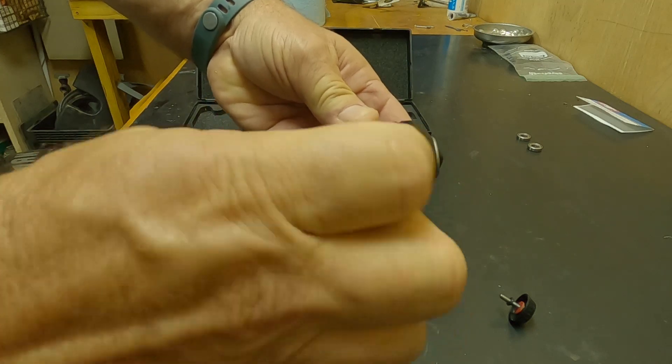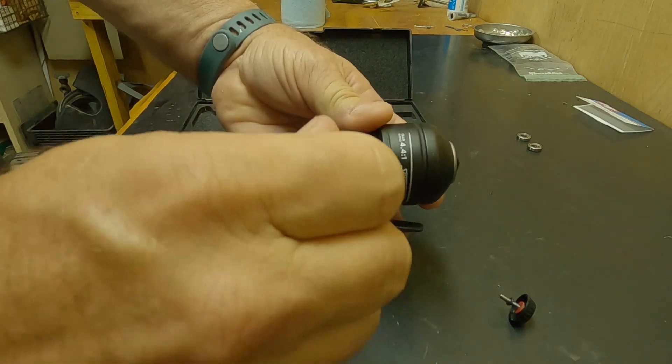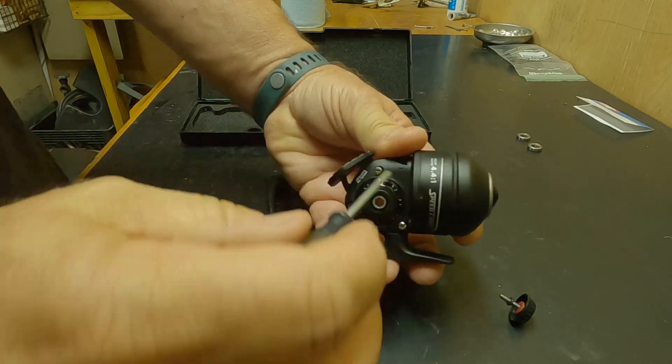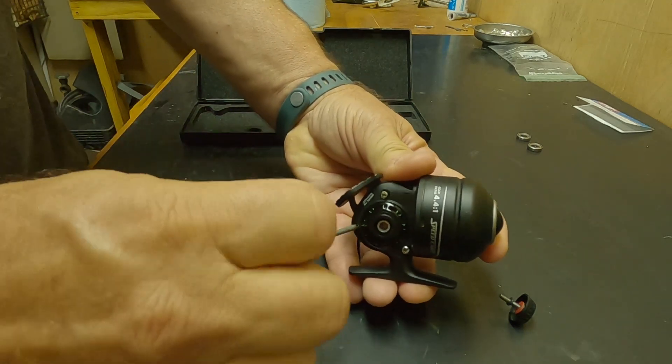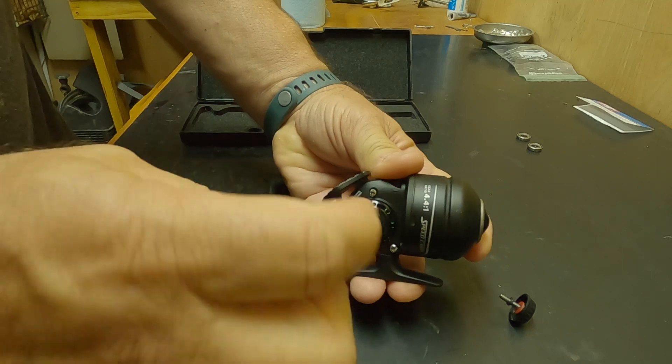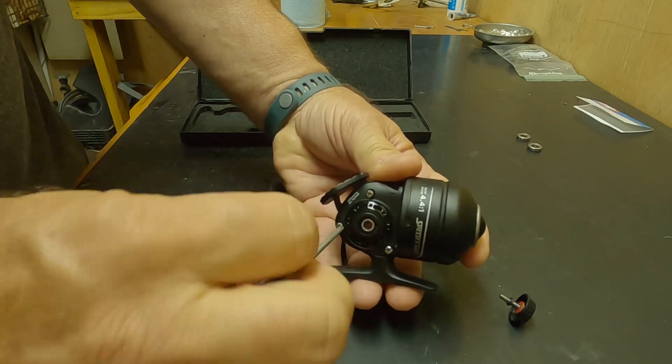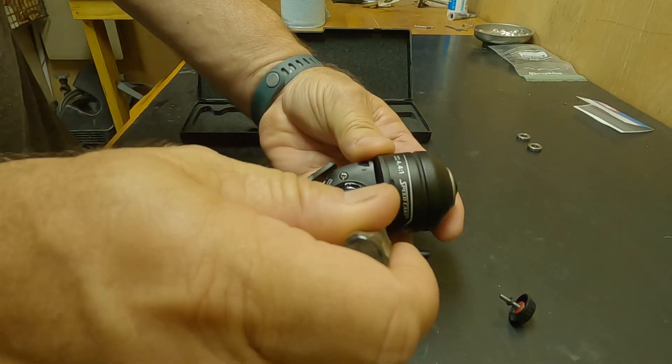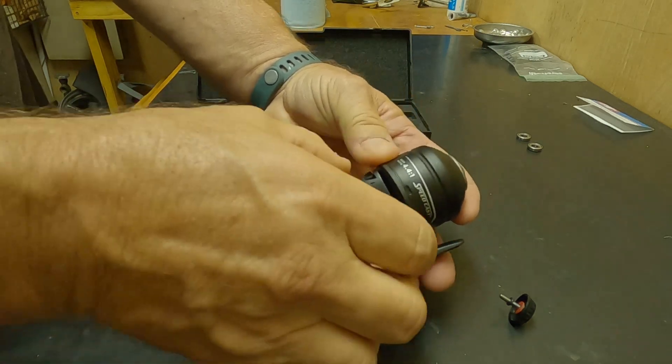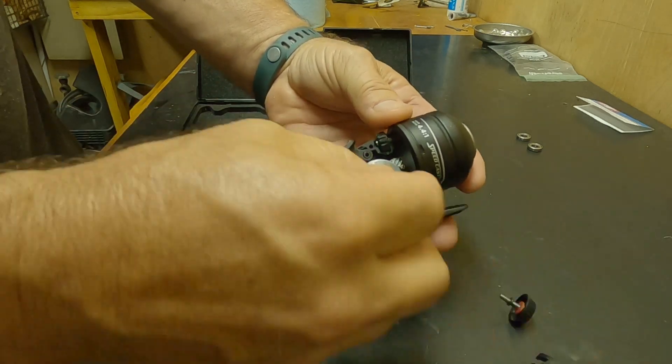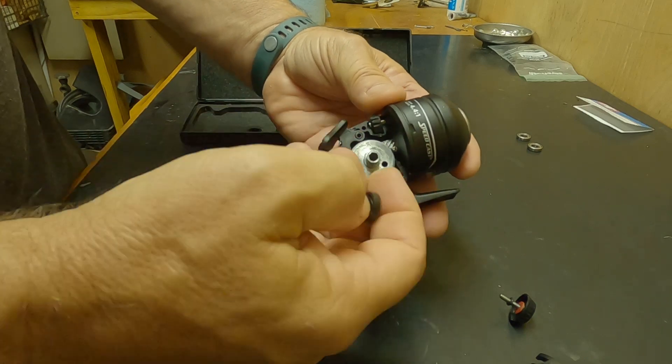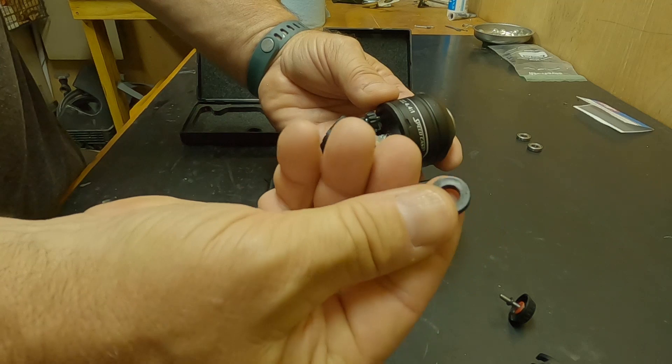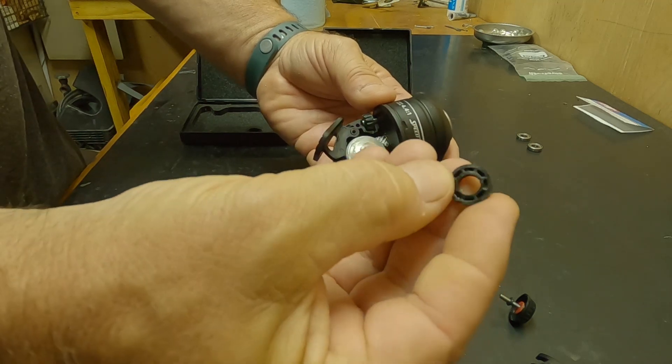I got three screws that hold the side cover on. And these here are the plastic bushings that we're going to replace with ball bearings.